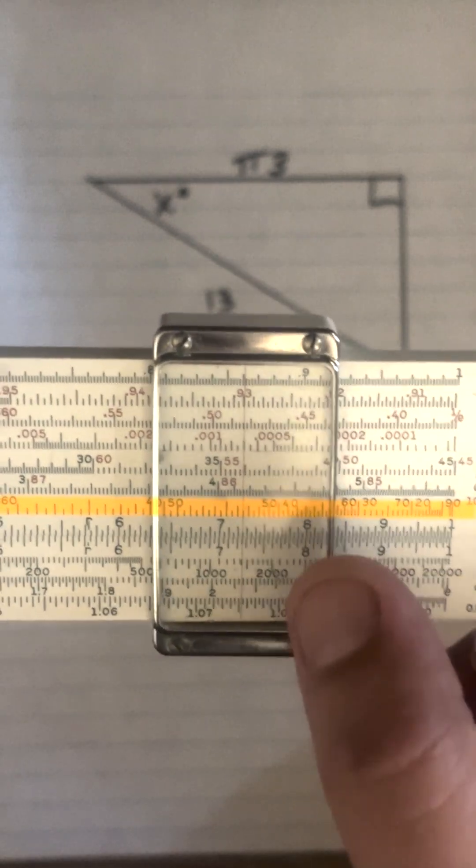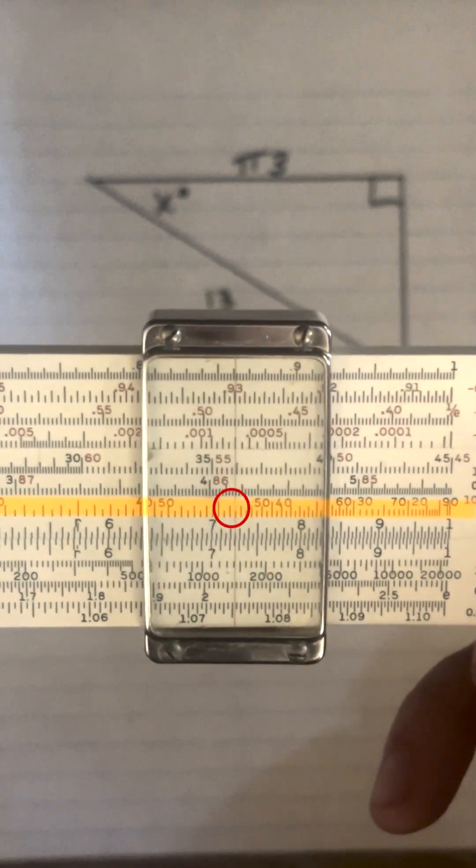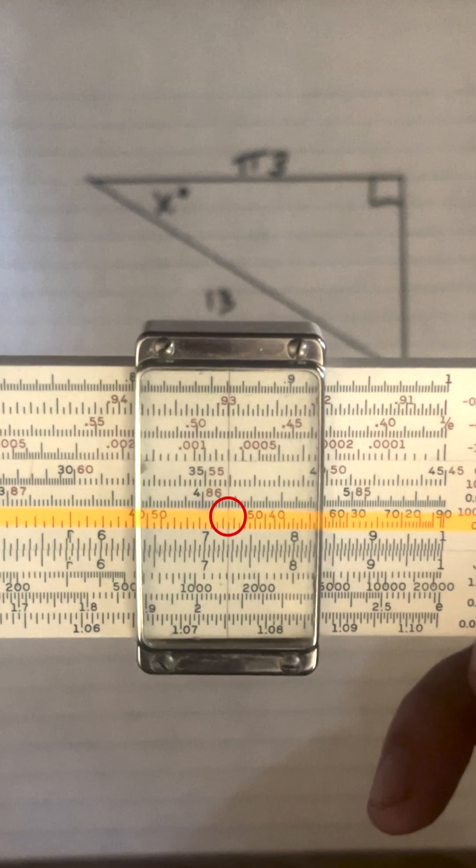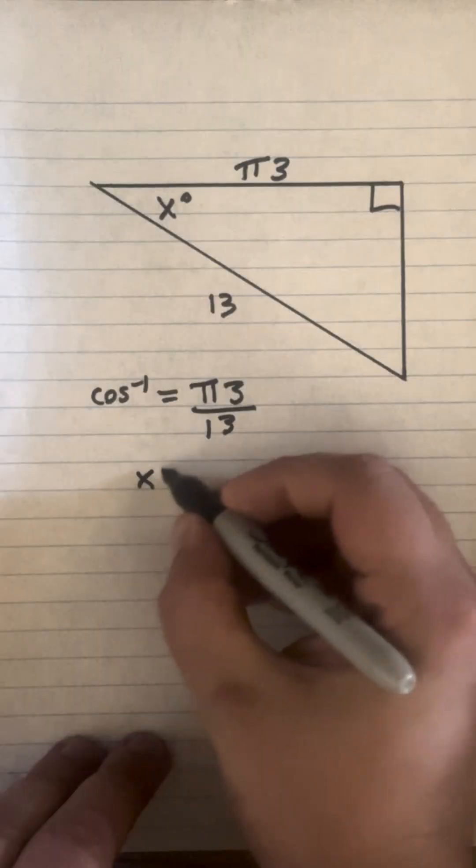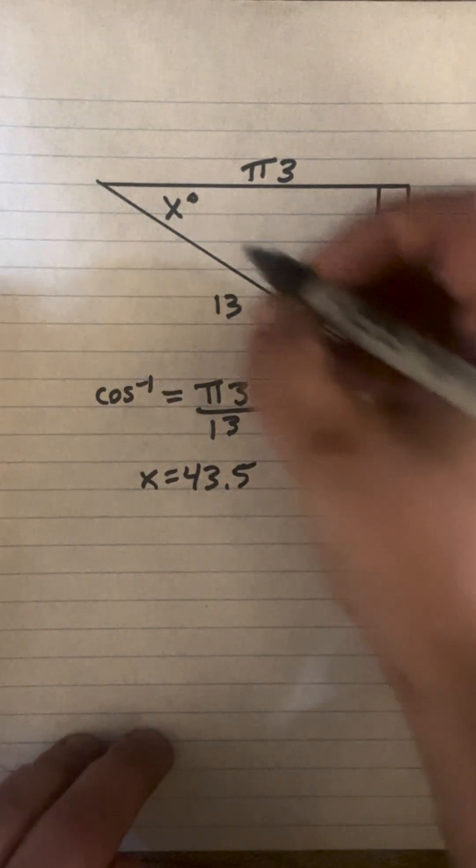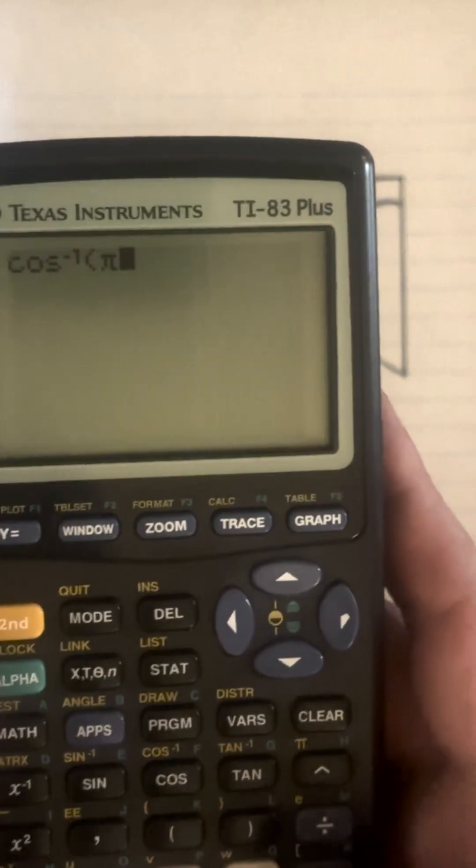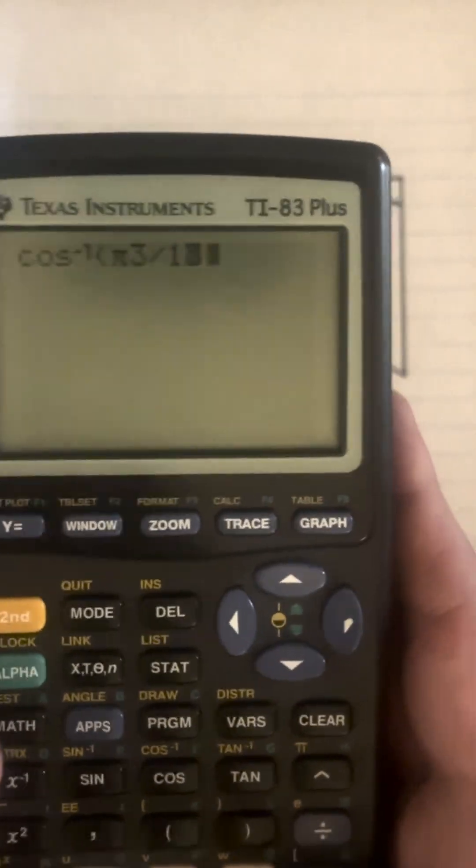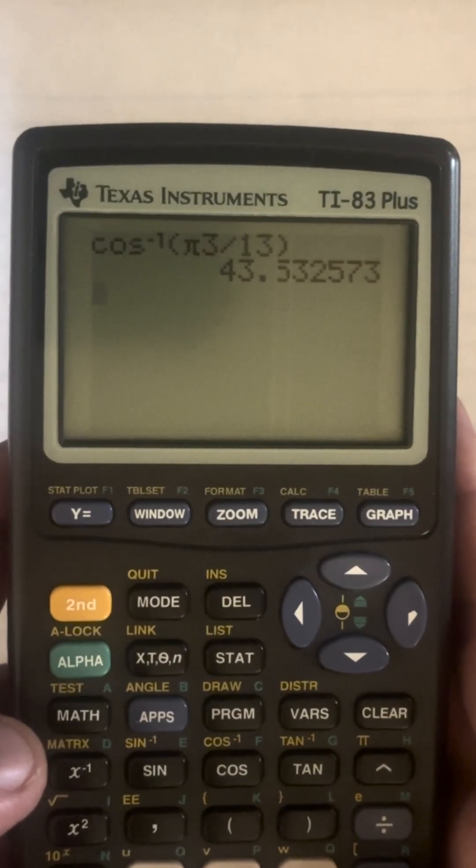And if we look on cosine, we are at 41, 2, 3.5. X equals 43.5. Inverse operation of cosine, pi times 3 divided by 13, equals 43.5 degrees.